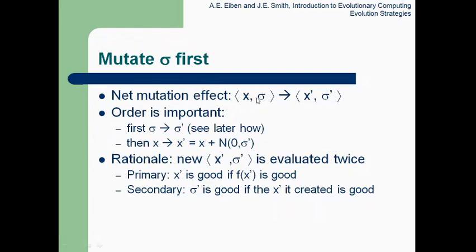For the native mutation effect: we have parent x and mutation step size sigma, and after mutation we get x-dash and sigma-dash. First we mutate sigma to get sigma-dash, and then we mutate x to get x-dash, where x-dash equals x plus N(0, sigma-dash). If the fitness of x-dash is good, then x-dash is good and sigma-dash is good. If the fitness of the offspring is more, the mutation is good, and that means the sigma step size mutation is good.